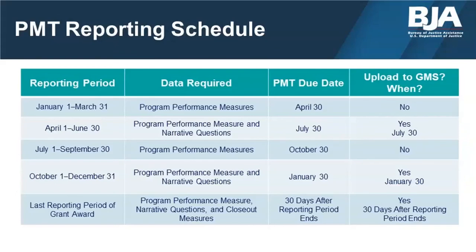This is the reporting schedule that details the timeframe for each reporting period, the type of data required, and the due dates for submitting it in the PMT and GMS. You will enter program performance measures every quarter and enter the narrative section twice a year, during the April to June and October to December reporting periods. This table can be found on the PMT's Information and Resources page. The PMT is accessible year-round for data review, report generation, and account management. Data entry is only scheduled for the month following the close of a reporting period. If you need to edit data outside of the scheduled due dates, contact the PMT Help Desk.